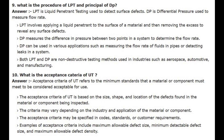Number 9. What is the procedure of LPT and the principle of DP? Answer. LPT is liquid penetrant testing, used to detect surface defects. DP is differential pressure, used to measure flow rate. LPT involves applying a liquid penetrant to the surface of a material and then removing the excess to reveal any surface defects. DP measures the difference in pressure between two points in a system to determine the flow rate, and can also be used for detecting leaks in a system. Both LPT and DP are non-destructive testing methods used in industries such as aerospace, automotive, and manufacturing.